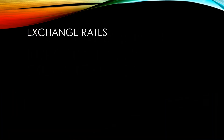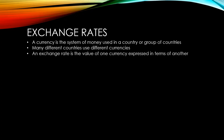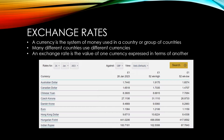A currency is the system of money used in a country or countries. Many different countries use different currencies. An exchange rate is the value of one currency expressed in terms of another. In this example you can see the value of one British pound expressed in a variety of other currencies.